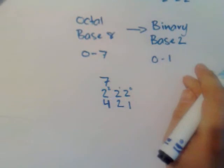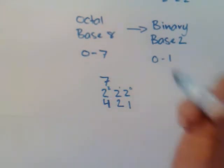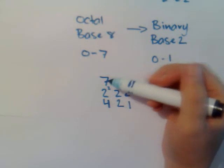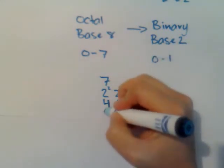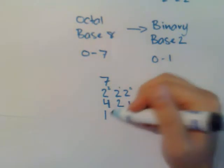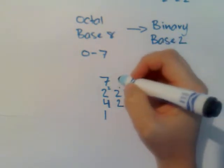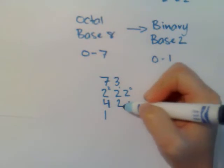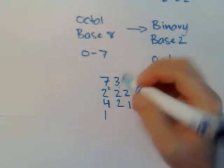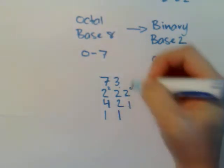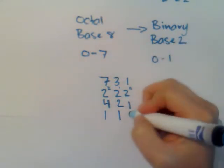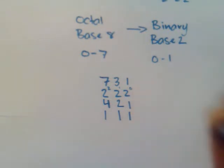So the next step would be to say how many times does 4 perfectly fit into 7, and that fits once and has a remainder of 3. And now I say how many times does 2 perfectly fit into 3? Well, it fits once with a remainder of 1. And how many times does 1 fit into 1? Well, that fits once.